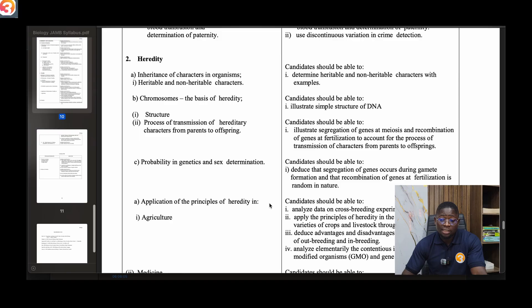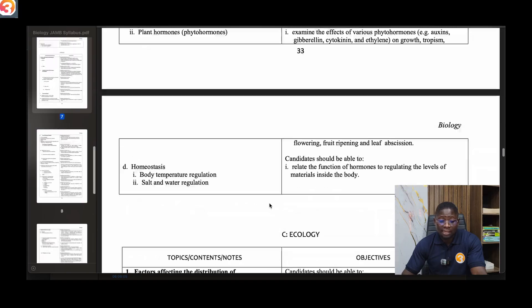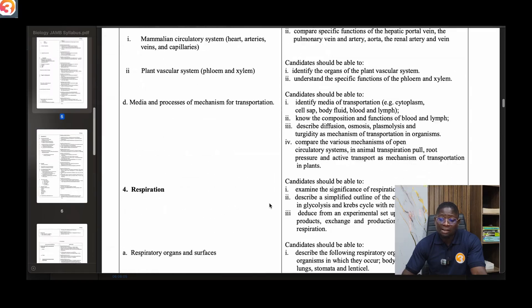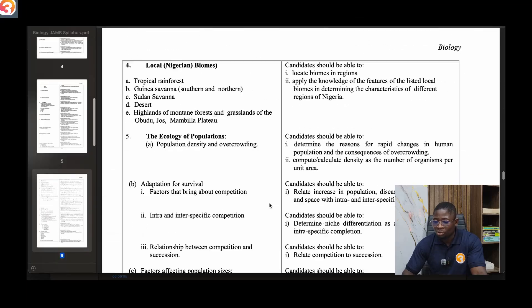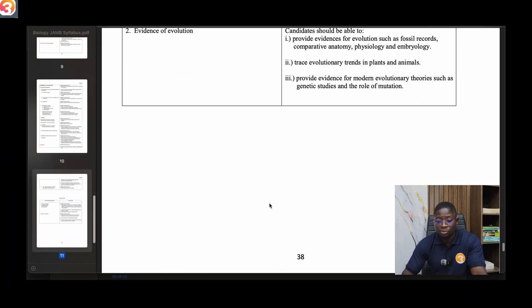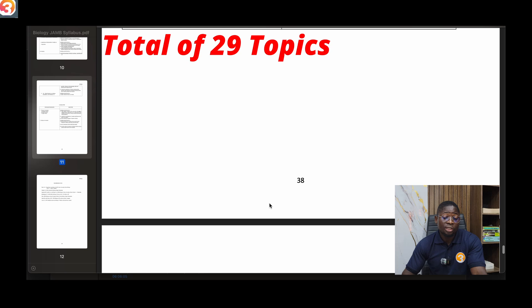If we add all of these topics together, you're going to have a total of 29 topics that you are going to study, and they are very, very broad. They are not really too easy - they are very broad. So you need to actually be able to finish all of them.